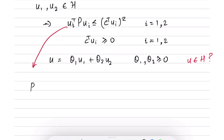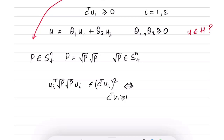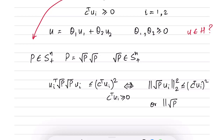For any symmetric positive semi-definite matrix, we have P = √P · √P, where √P is also symmetric positive semi-definite. Using this, we can write u_i^T P u_i = (√P u_i)^T (√P u_i) ≤ (c^T u_i)^2. Since c^T u_i ≥ 0, this is equivalent to saying the L2 norm of √P u_i is less than or equal to c^T u_i.